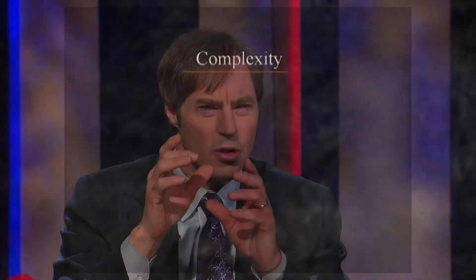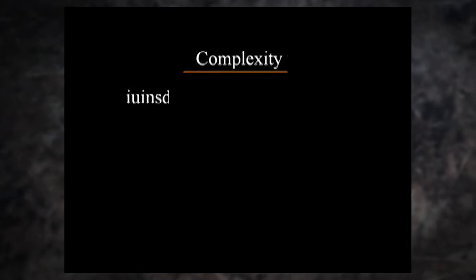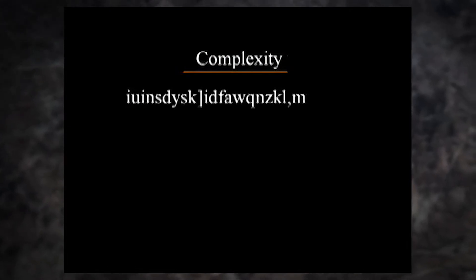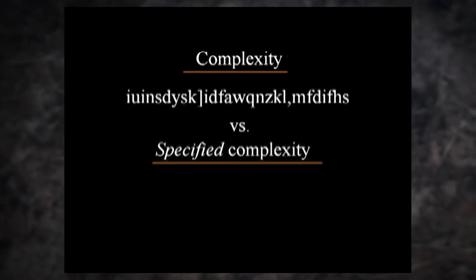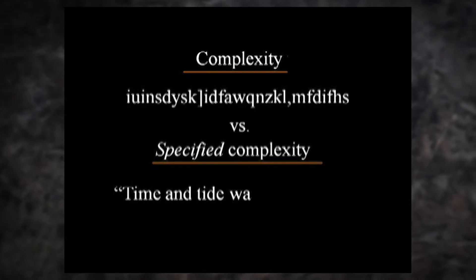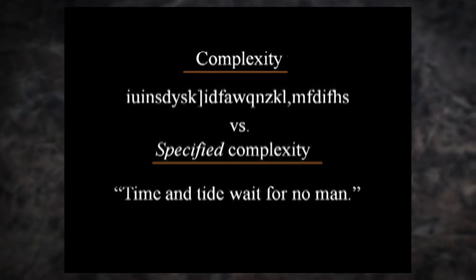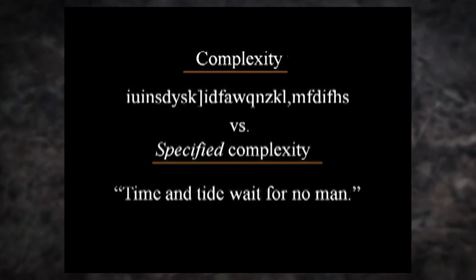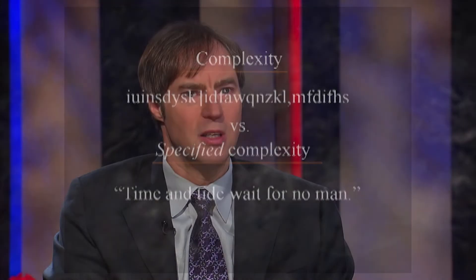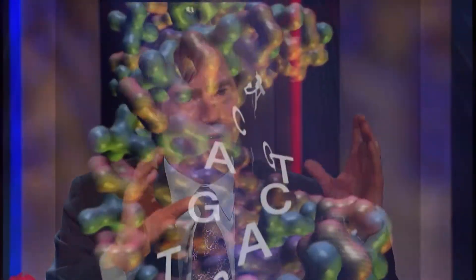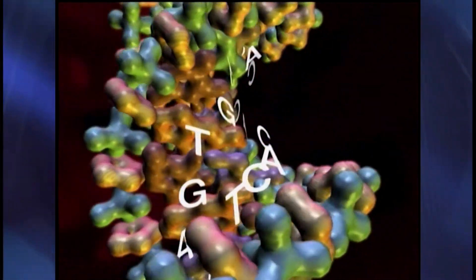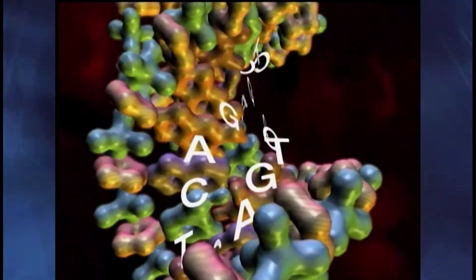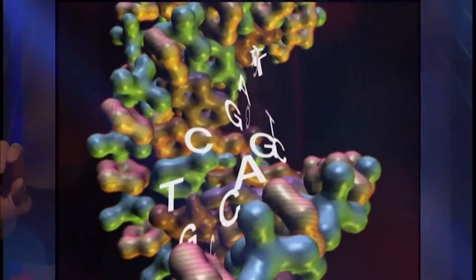It's not their chemical shape or structure that matters. What matters is the arrangement of those chemicals such that they are able to convey instructions for building all the important proteins and protein machines that keep cells alive. So what you have on the DNA molecule is literally digital code that provides instructions for building the crucial parts of cells that allow all life to exist.